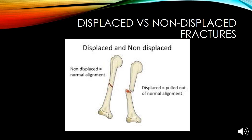Displaced and non-displaced fractures refer to the way the bone breaks. A non-displaced fracture will remain in the normal alignment and can be treated by just immobilizing and letting it heal with time. A displaced fracture is a break that causes the bone to be pulled out of normal alignment and most likely will need surgery to repair.